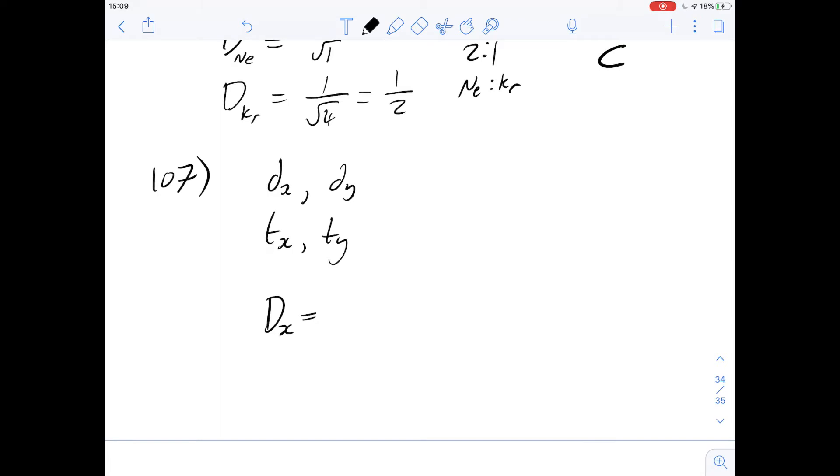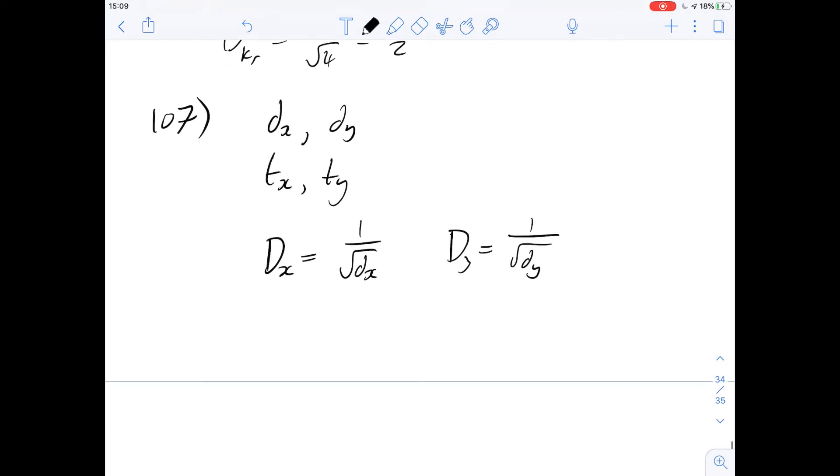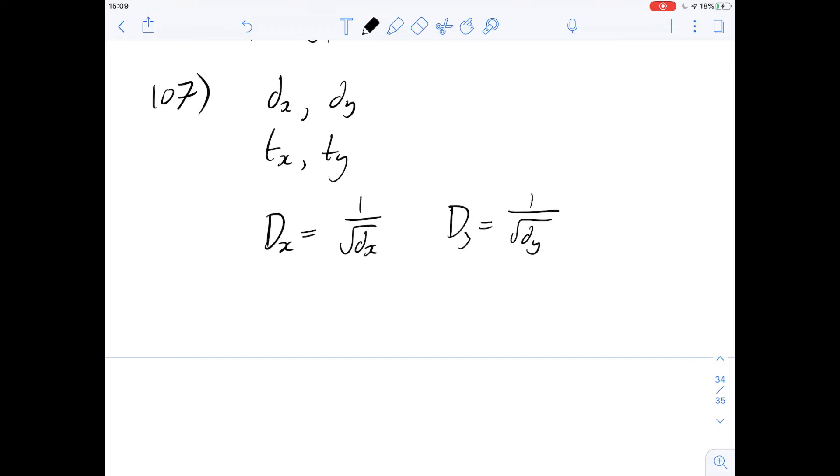Okay, so we've got the diffusion rate of x is going to be 1 over the square root of the density of x and the diffusion rate of y is going to be 1 over the density of y. If we're going to be then finding a ratio of these two, if we're going to be finding a ratio of these rates, we can use that to infer the ratio of times in terms of their densities.